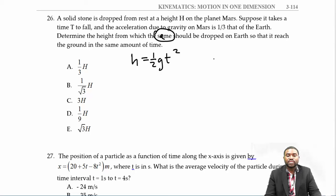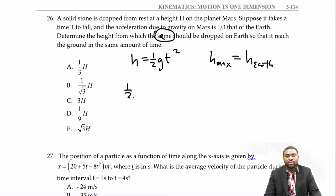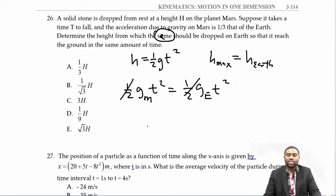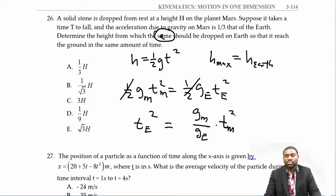The height on Mars equals the height on Earth, so ½g_Mars·t² = ½g_Earth·t². The halves cancel, giving us g_M·t_M² = g_E·t_E², which means t_E² = (g_M / g_E) × t_M².